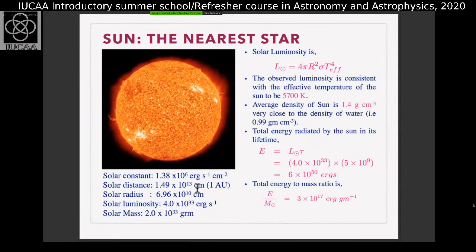Given this, you can actually calculate what is the solar luminosity. Luminosity is the energy per unit time. Solar luminosity is of the order of 4 × 10^33 ergs per second. This luminosity is called bolometric luminosity, meaning this is the energy emitted over all frequency bands, which you can observe as well as the ones which you don't observe.